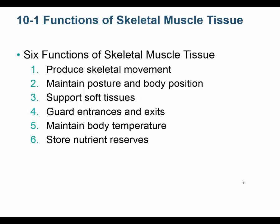Here are six functions of skeletal muscle tissue. Muscles move your bones around. They maintain posture and body position. They support soft tissues — there are sphincter muscles and circular muscles that open and close. Smooth muscles are also wrapped around tubes like blood vessels and the digestive tract, supporting them. Muscles maintain body temperature through shivering, and they store nutrient reserves such as glycogen and fats.